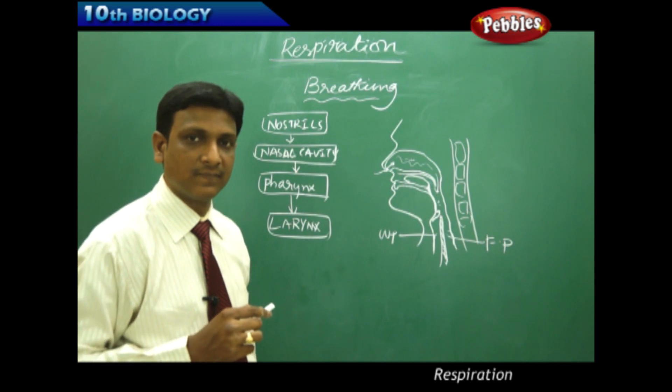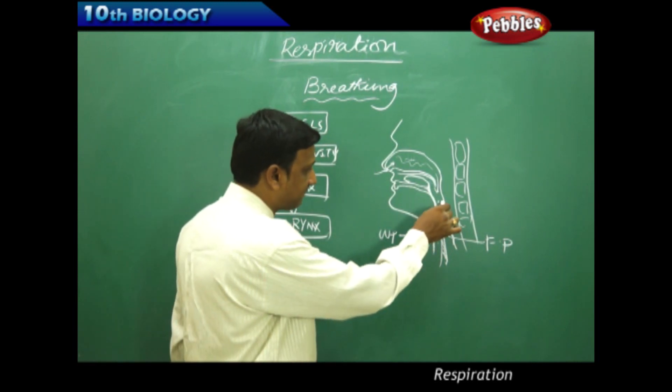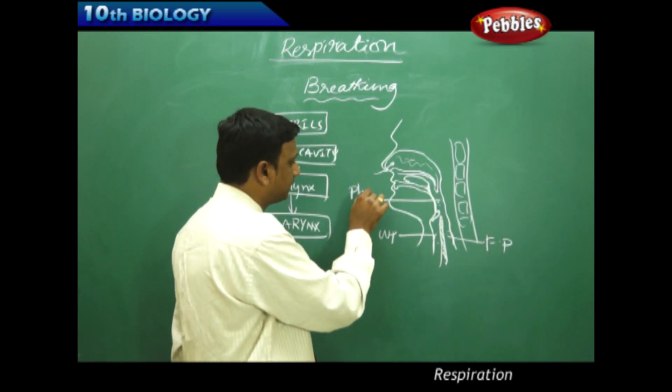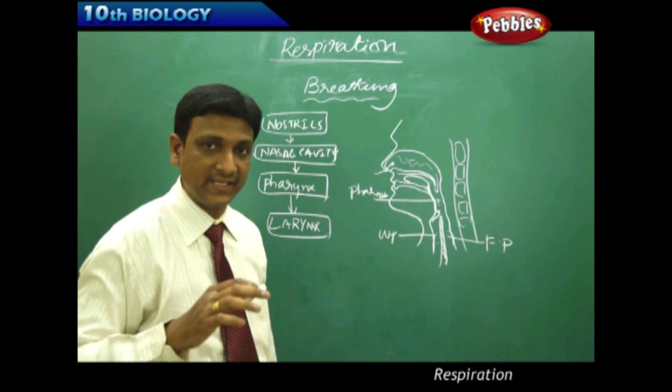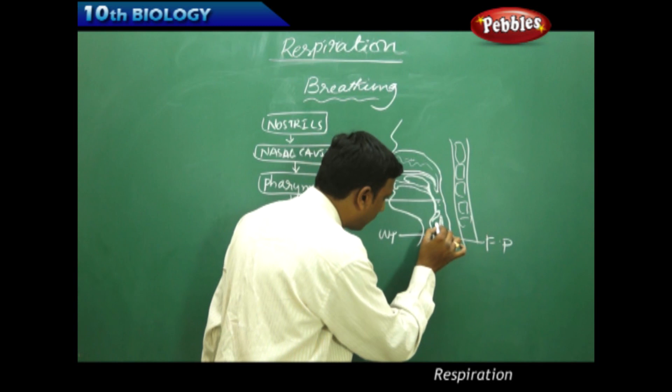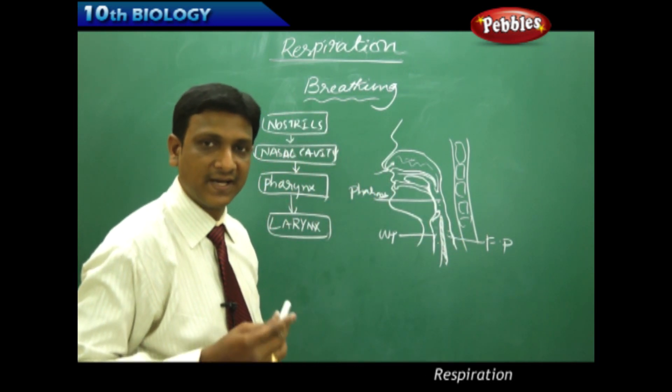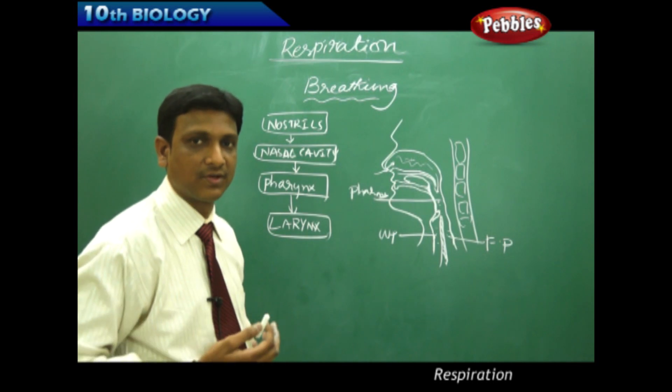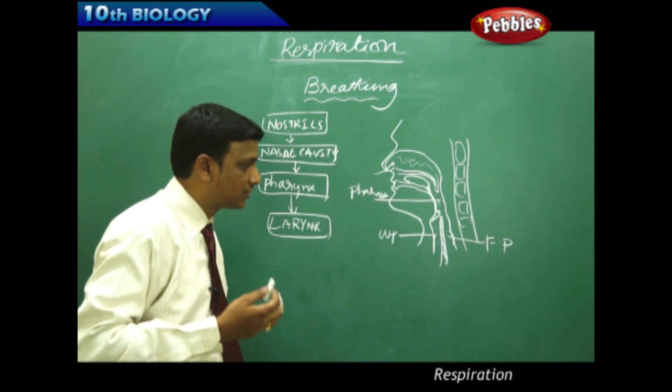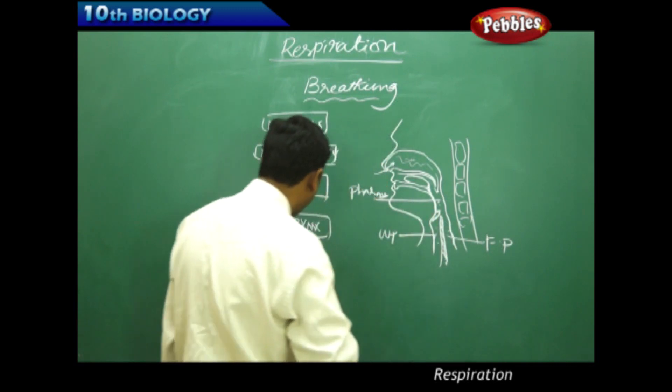So here the food should not enter the windpipe. But we have seen that the pharynx is a common passage for food as well as air. So there is a chance of food entering into our windpipe or trachea. If it enters, it leads to cough and other problems. The food cannot enter the windpipe, as it disturbs our total breathing and respiration.